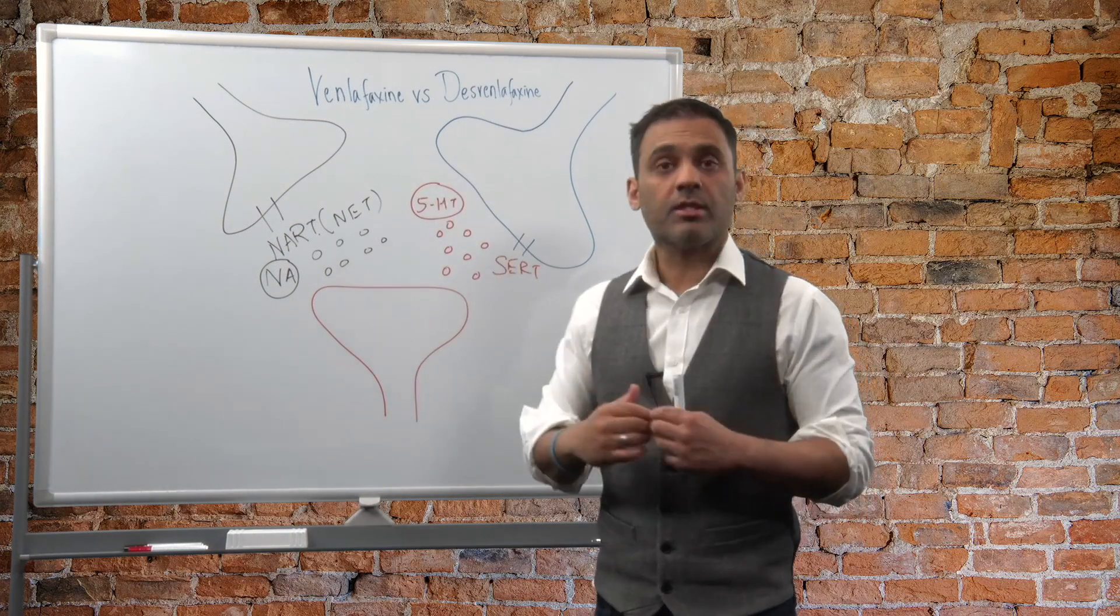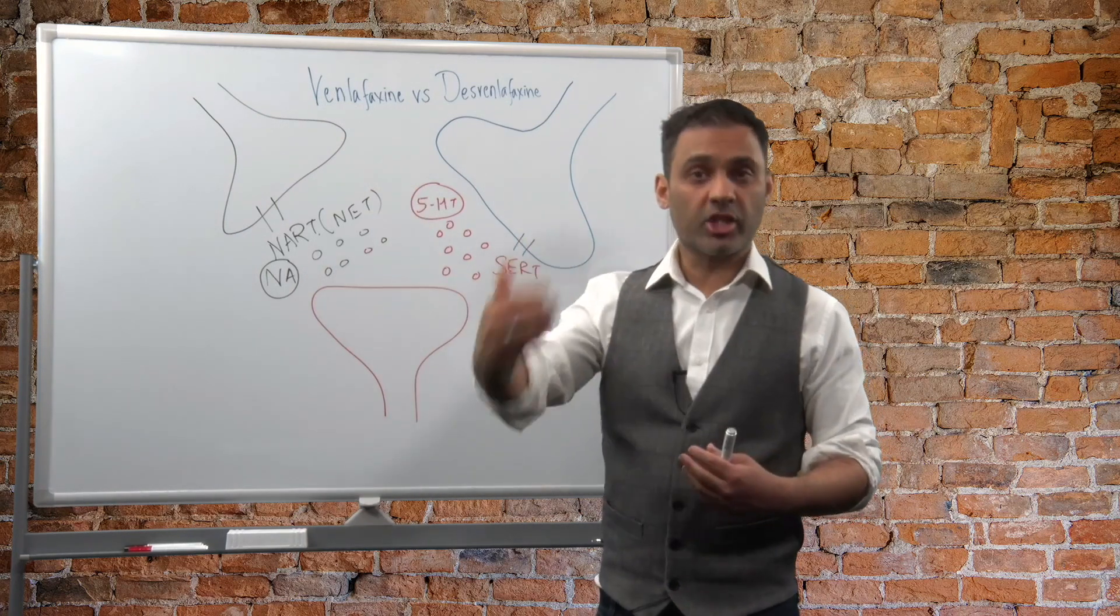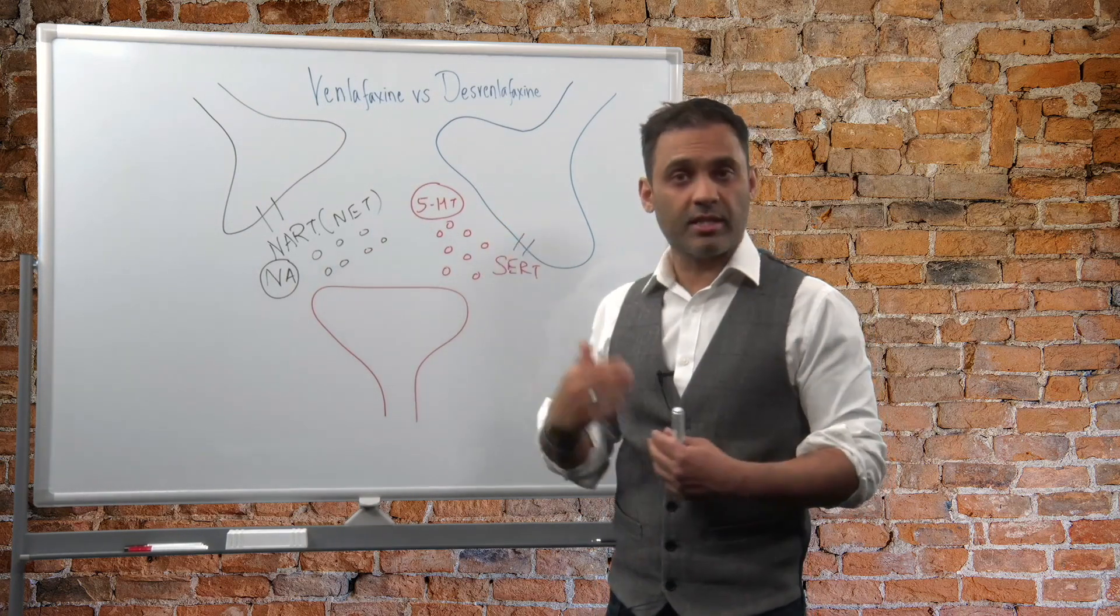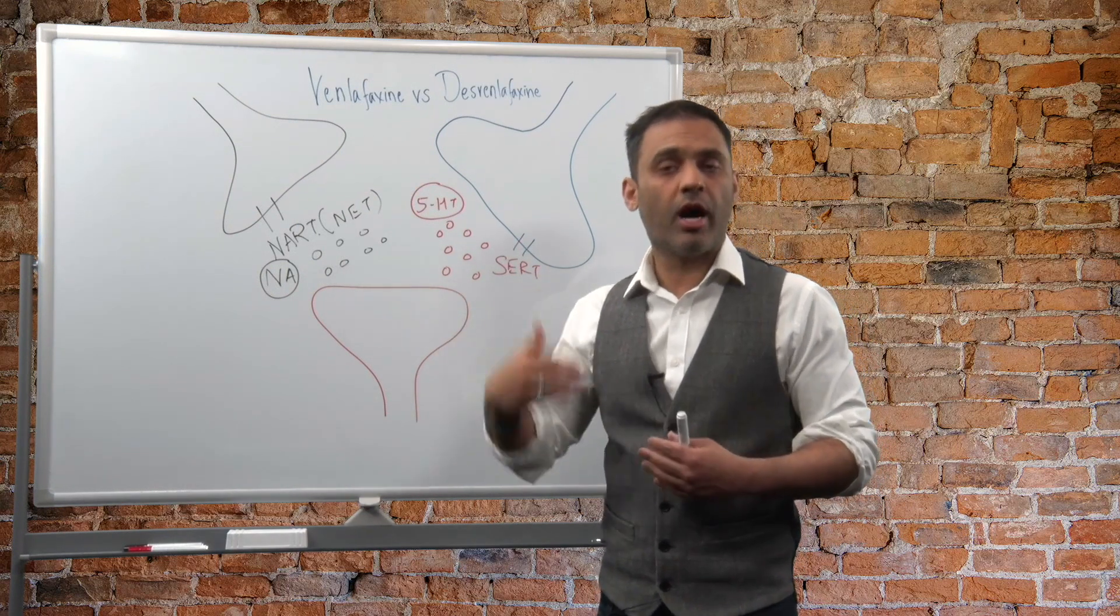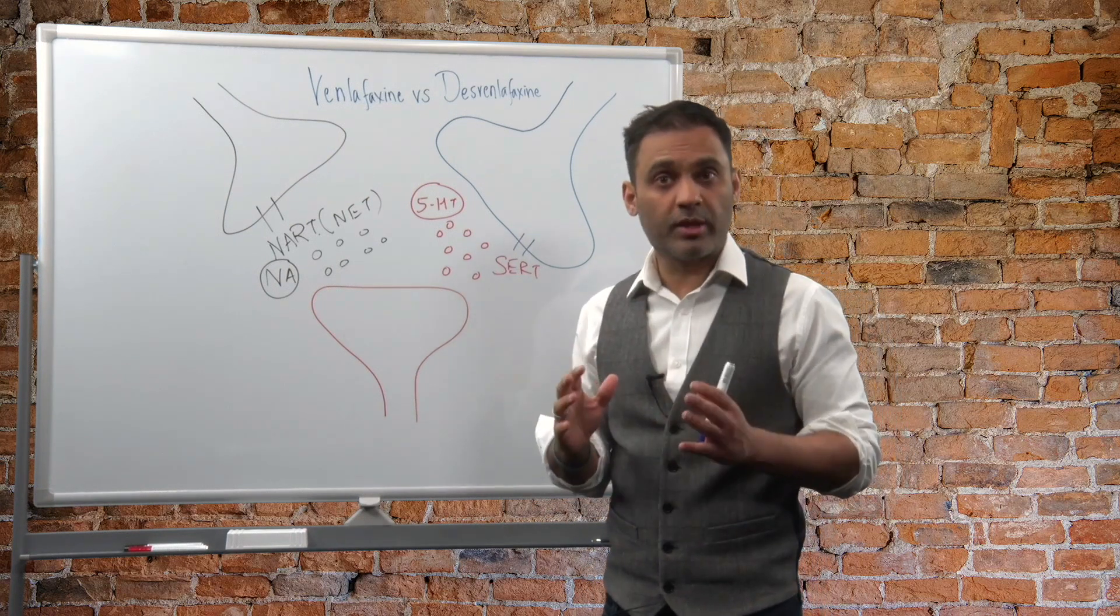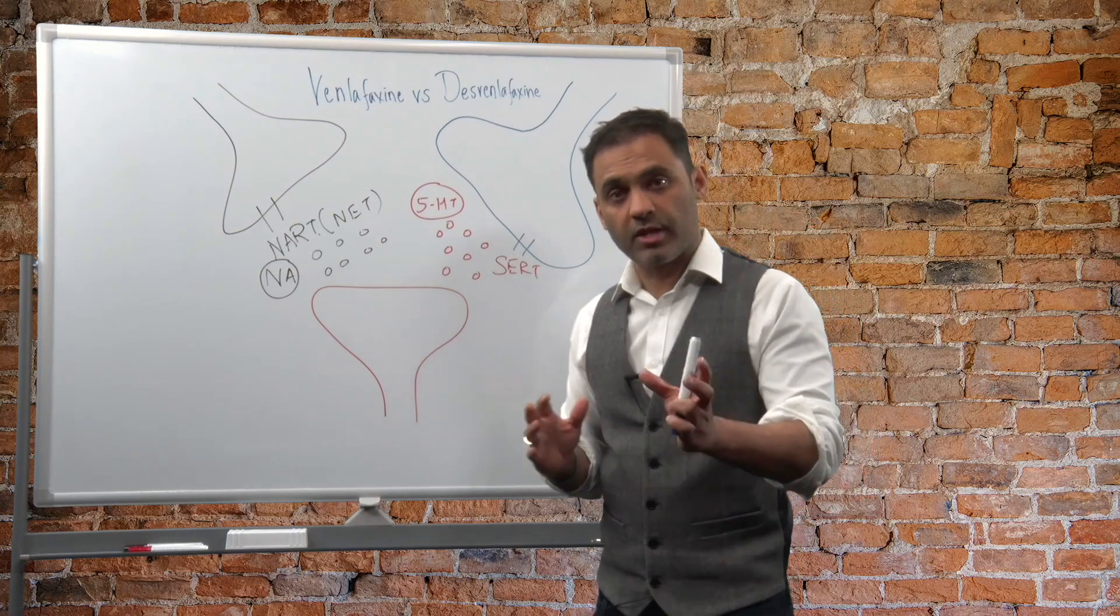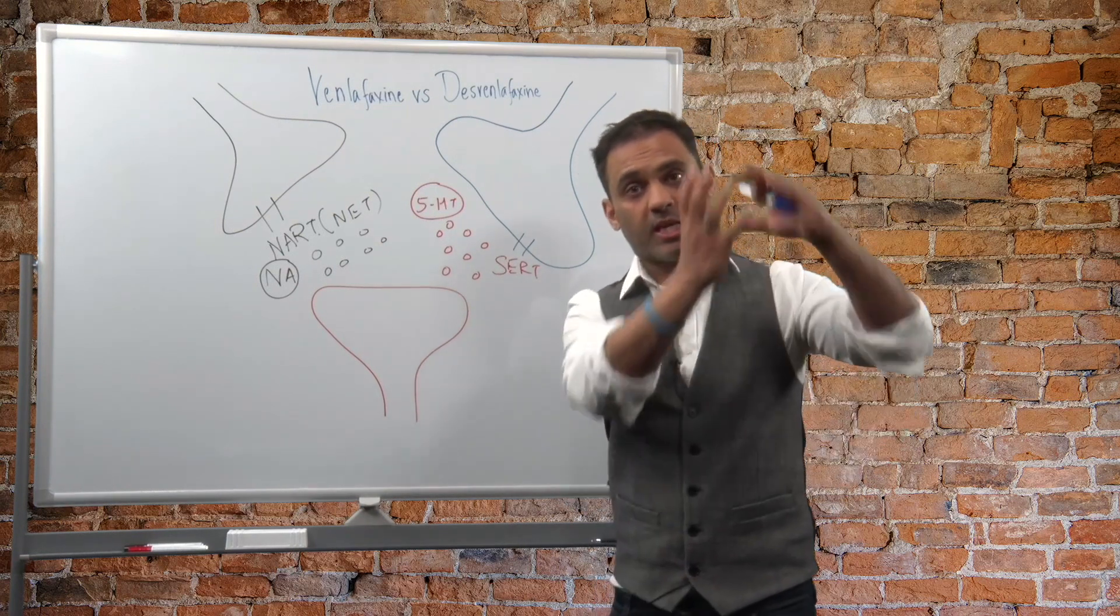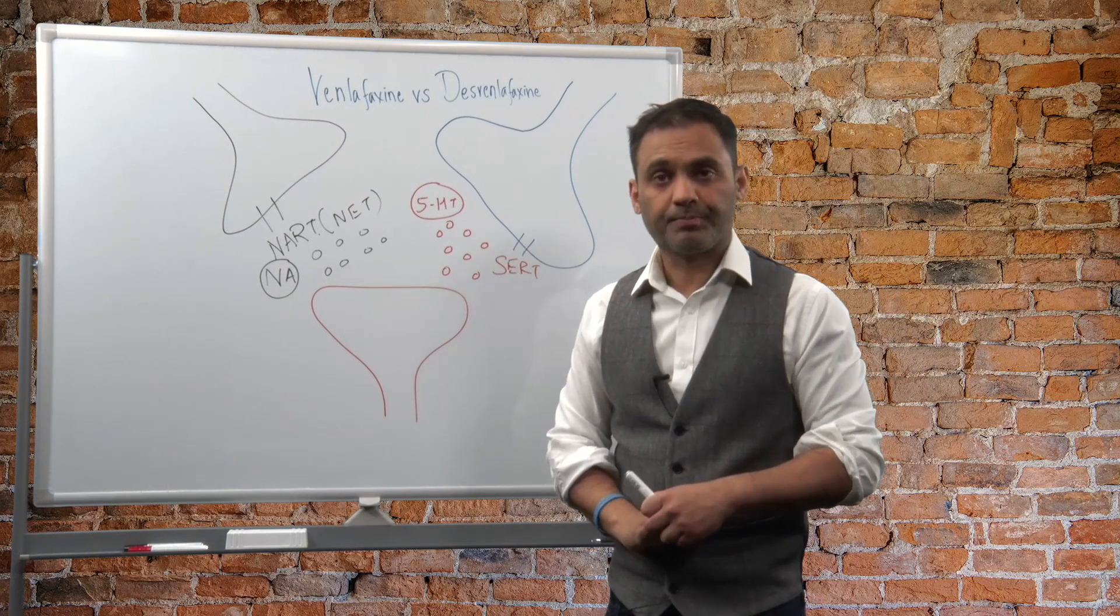And both of these agents do provide dopamine. Venlafaxine does it at much higher doses. Desvenlafaxine does it at the lower dose a little bit, and then as you go higher also provides dopamine. But in its side effect profile, you can see you're getting this double whammy with venlafaxine, lots of serotonin. And as you go up, you continue to get the serotonin and noradrenaline goes up as well.